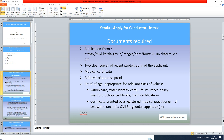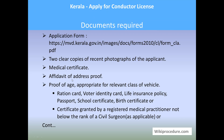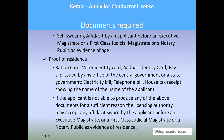You need the application form for the offline procedure, two clear copies of recent photographs of the applicant, a medical certificate, an affidavit of address proof, and proof of age appropriate for the relevant class of vehicle — such as a ration card, voter identity card, life insurance policy, passport, school certificate, birth certificate, or a certificate granted by a registered medical practitioner not below the rank of civil surgeon, or a self-sworn affidavit by the applicant before an executive magistrate, a first-class judicial magistrate, or a notary public as evidence of age.